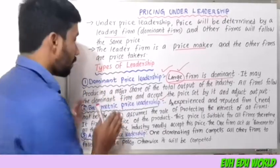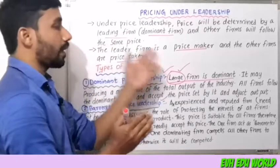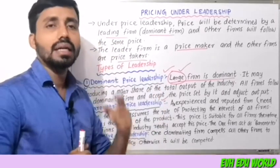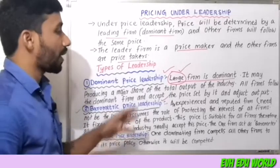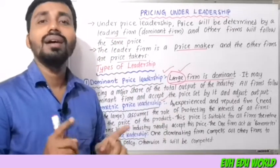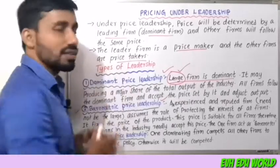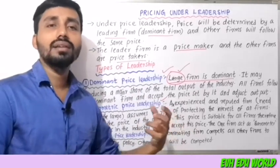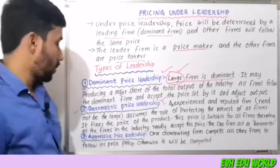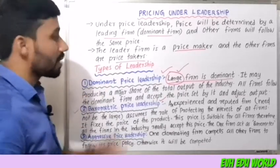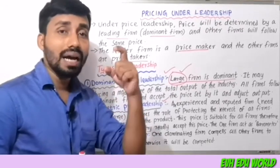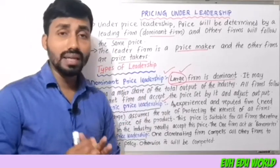The second type is barometric price leadership. Here, an experienced and reputed firm assumes the role of protecting the interest of all firms — it need not be a large firm. This firm fixes the price, and all other firms follow it. One firm acts as a barometer for the industry.